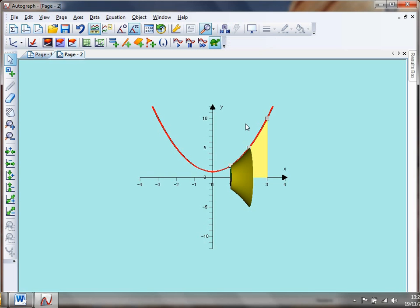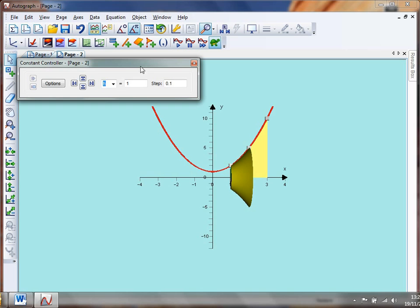But if I'm to reduce the value of h, what's that shape going to start to resemble? So I can use my constant controller and I can start reducing the value of h and we start to see a different shape forming. Now I'm down to a value of h of 0.1 there.